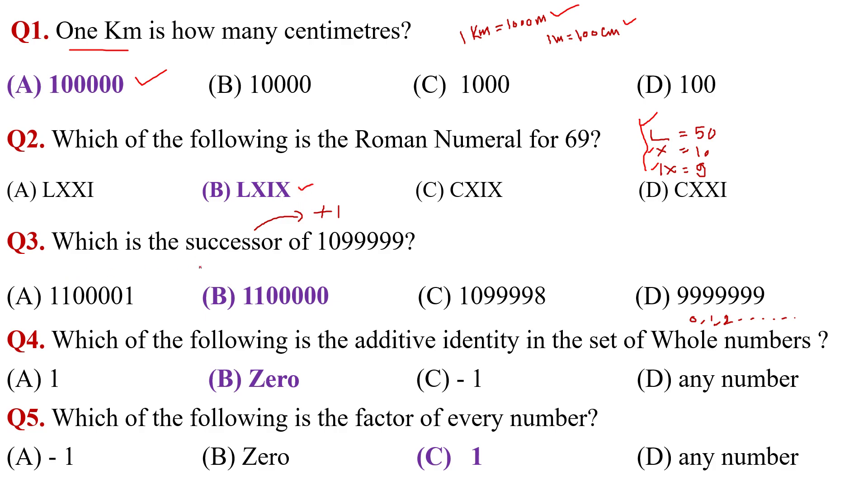Question number three, which is the successor of 1099999? Successor means plus one, predecessor means minus one. When you do plus one, then option B is the correct answer, 1100000.